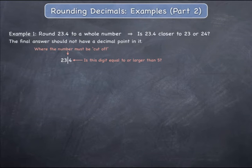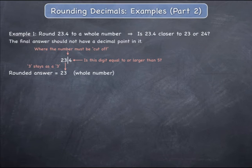If not, as is the case here because the digit is a 4, the previous digit immediately before the line stays as it is. All remaining digits after the line are dropped, giving the final rounded answer of 23 expressed as a whole number. This means that 23.4 is more closely approximated by 23 than it is by 24.